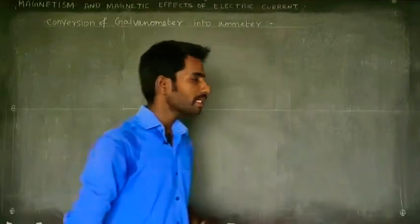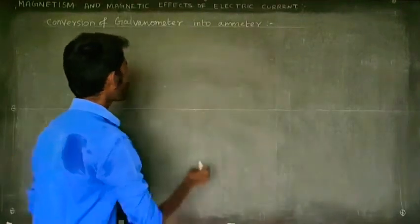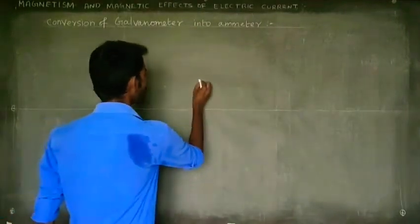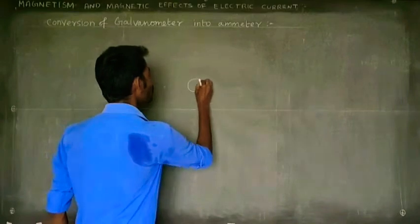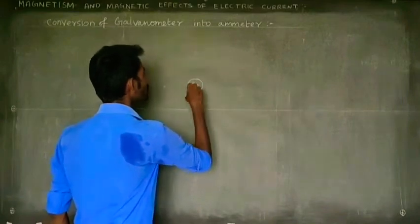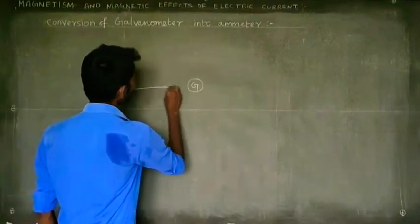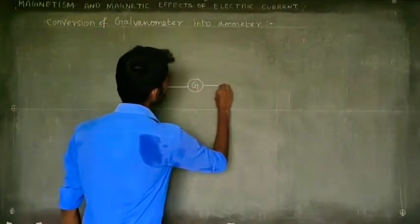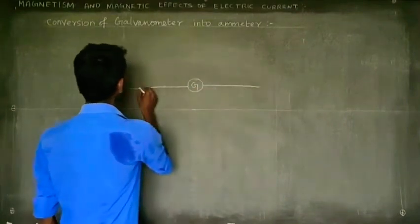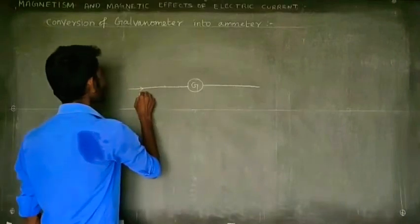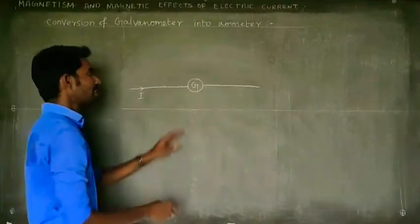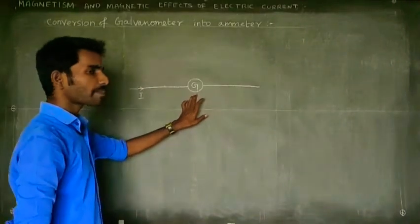In that case, we have a galvanometer. This is a galvanometer. What do we do with this galvanometer? An ammeter is not a galvanometer, so how do we make an ammeter from it?